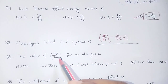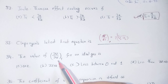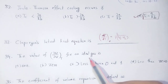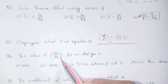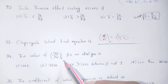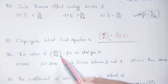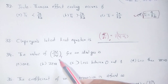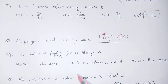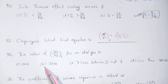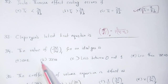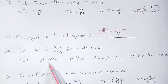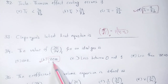The value of del U by del V at constant temperature for an ideal gas: the value is 0. Option number B is correct.